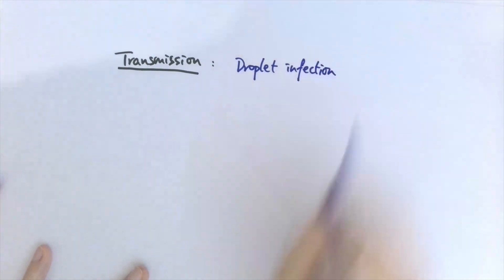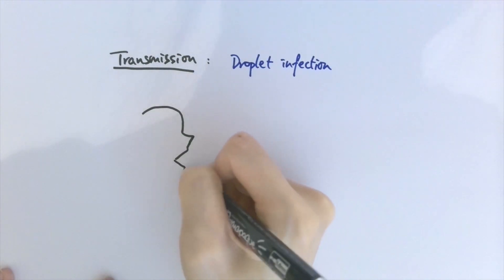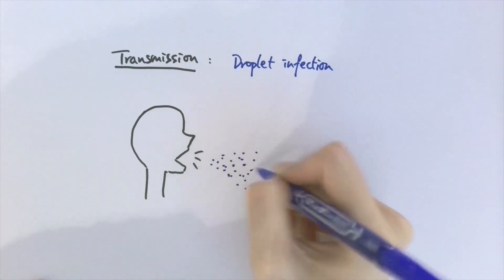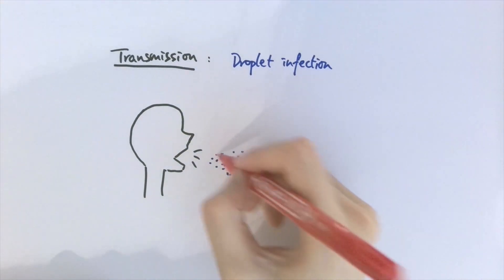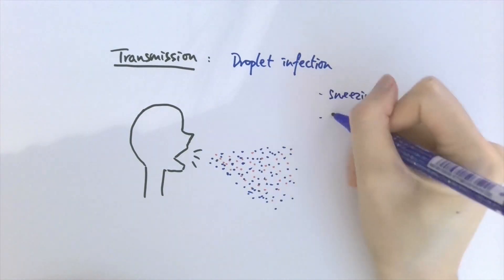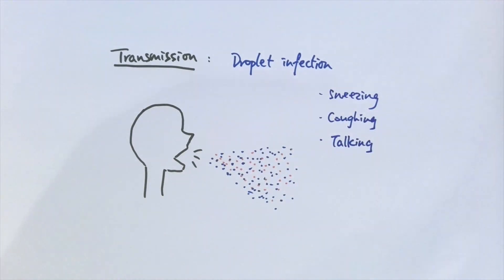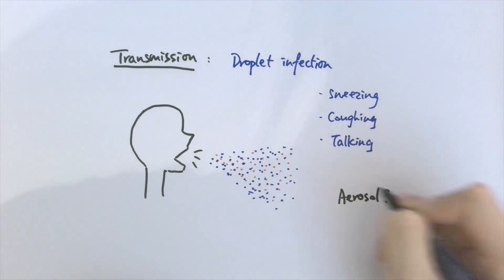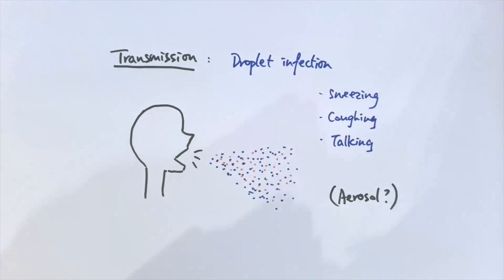Now let's talk about how the virus is transmitted. The virus is mostly transmitted by droplet infection, such as saliva drops when you sneeze, cough, or talk. These droplets can land on your hands and on things you touch, such as door handles and mobile phones, so it's essential to know how to protect yourself. There is also some evidence that it can transmit by aerosol, meaning the virus particles can float in the air for up to three hours, but there isn't enough evidence to confirm this yet.